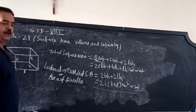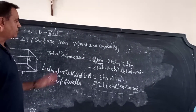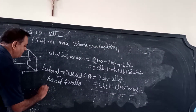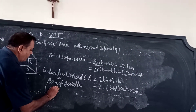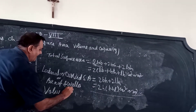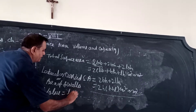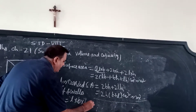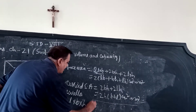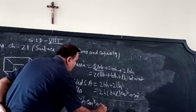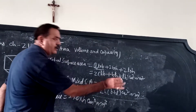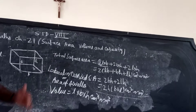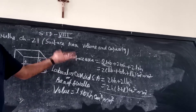Now to find the volume: volume is equal to length into breadth into height. The unit is centimeter cube or meter cube — whichever unit is given in the question, centimeter or meter, use that unit.